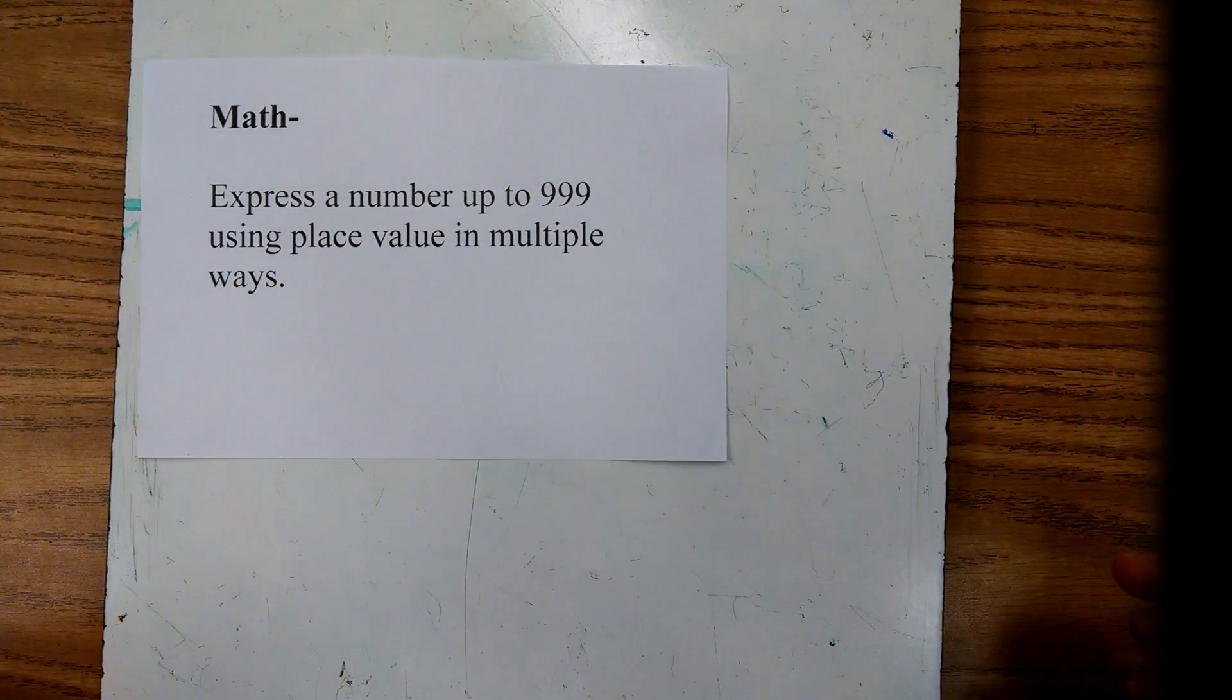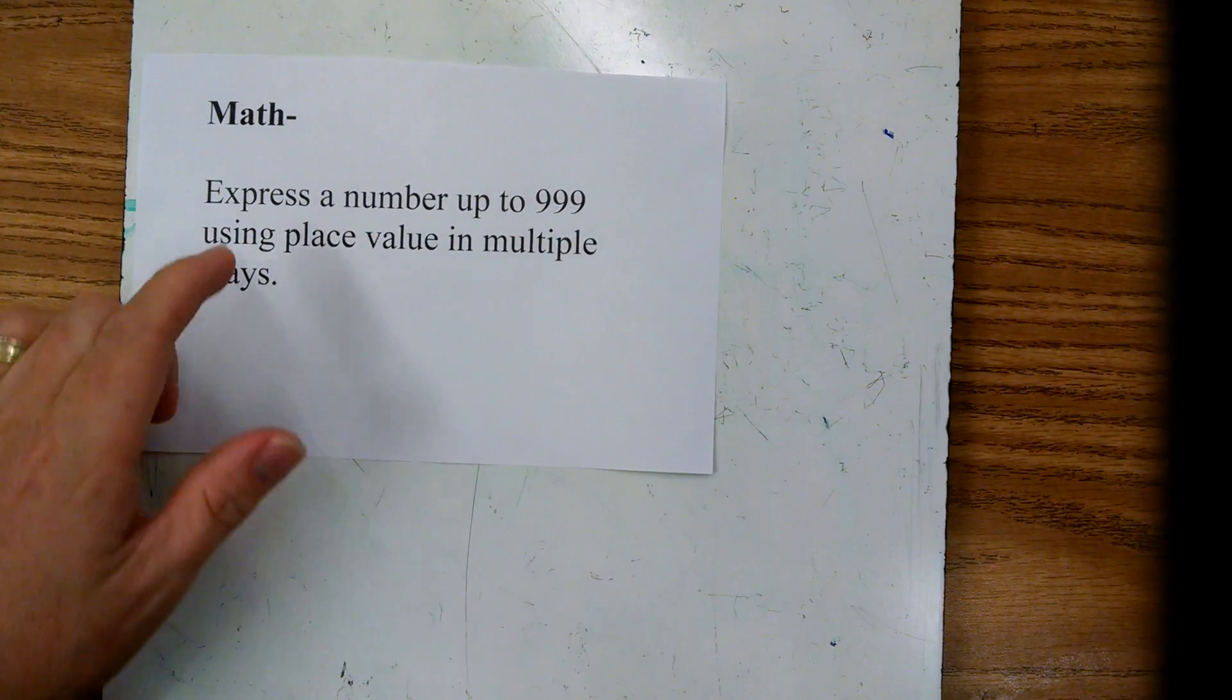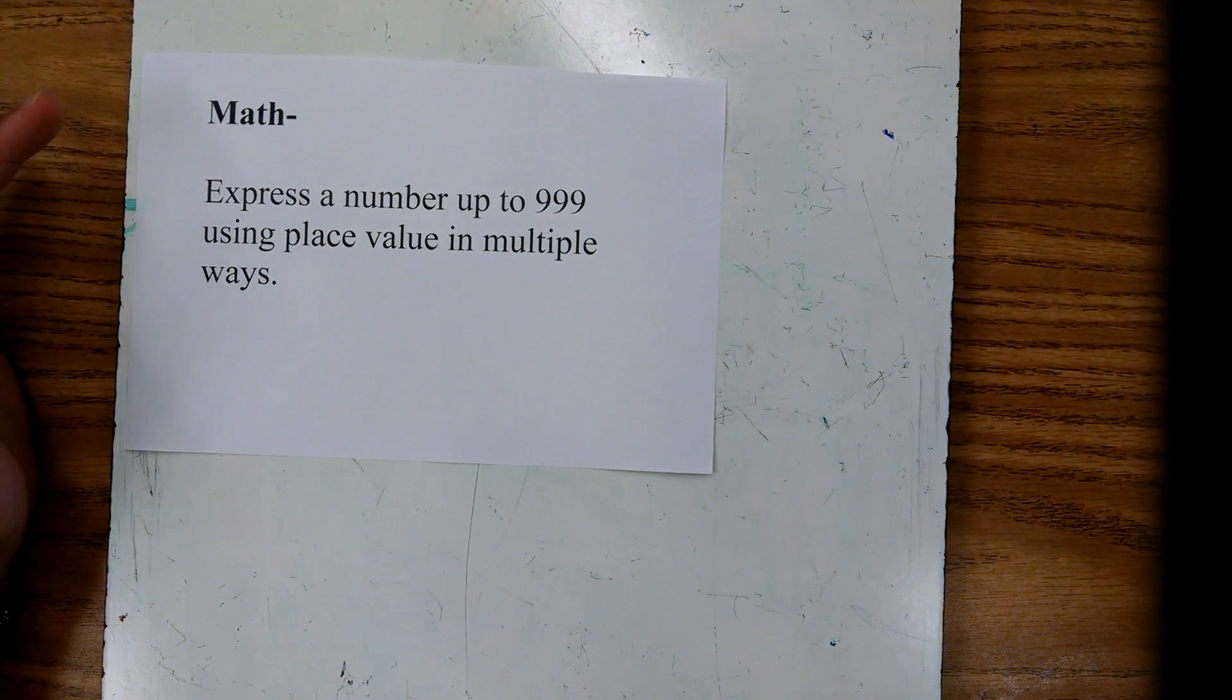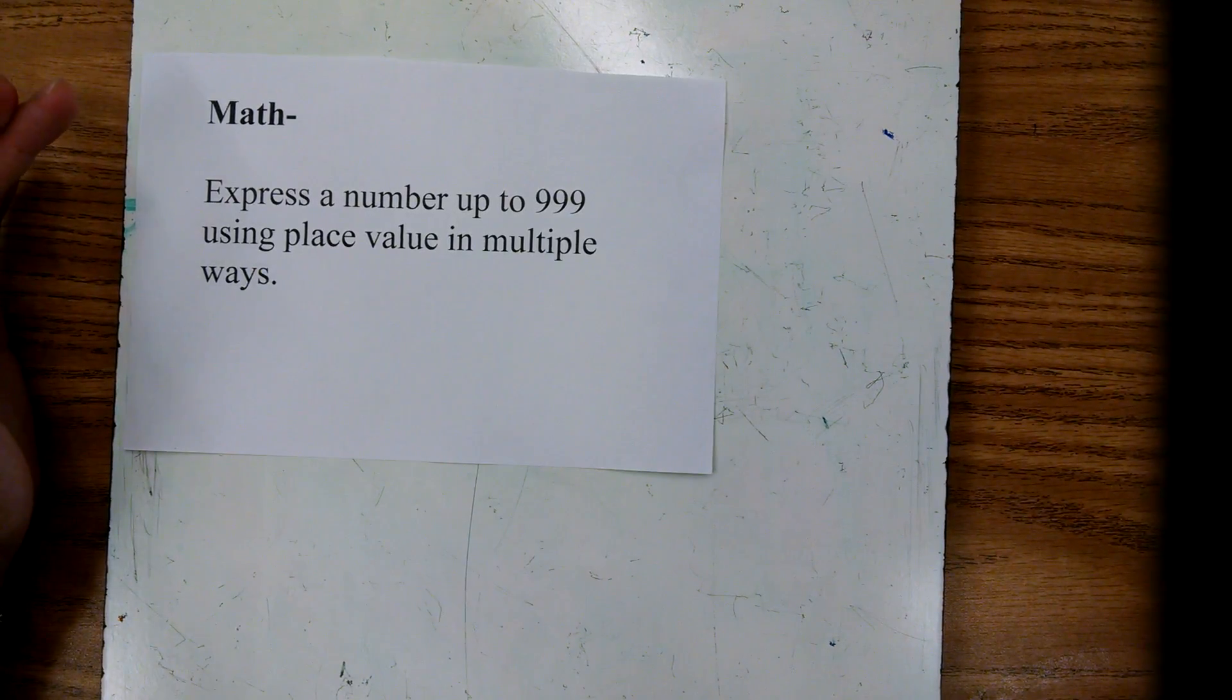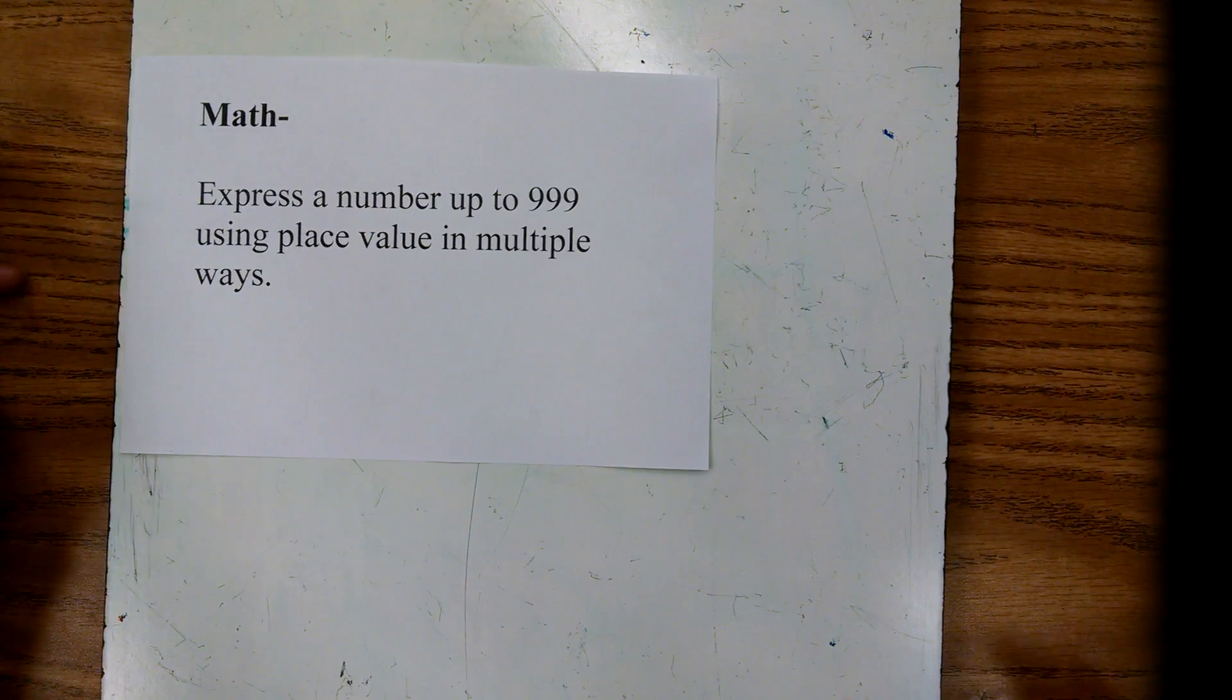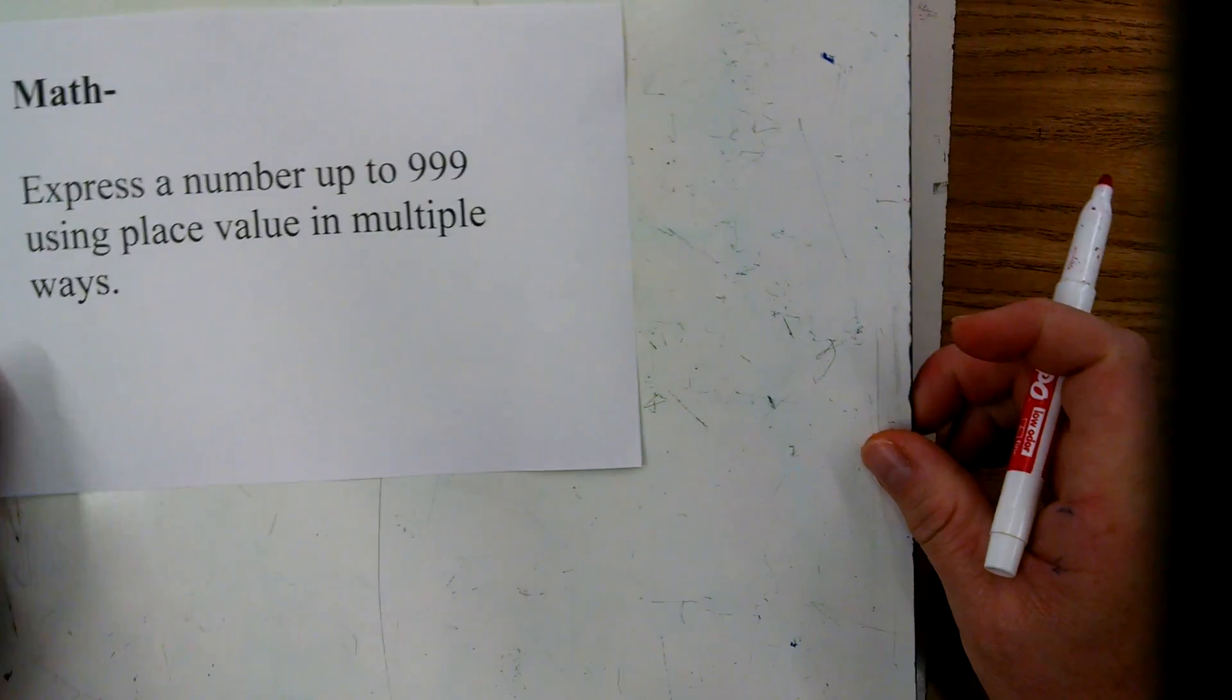Hi guys, I want to go over something we learned today in school and it is how to show or express a number up to 999 using place value in multiple ways. Simply put, that means I can show a three-digit number by using different combinations of ones, tens, or hundreds. So let's get down to it.